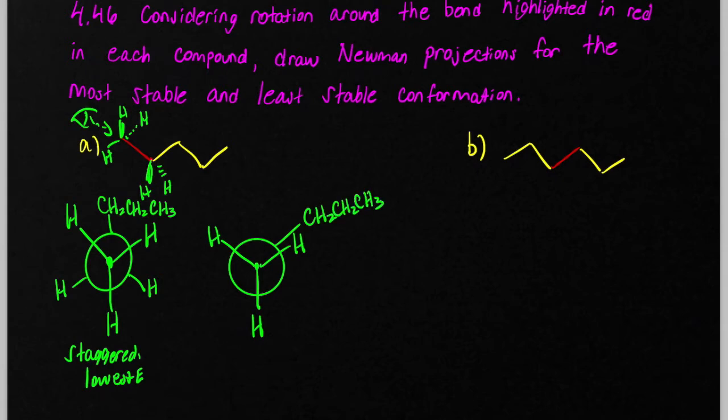My back hydrogen will end up here, and my back hydrogen will end up there. So this is what we call the eclipse conformation.